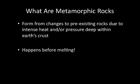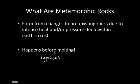So what are metamorphic rocks and what makes them different? Metamorphic rocks form from changes to pre-existing rocks due to intense heat and/or pressure, and this always happens deep within the Earth's crust. An important note is that this happens before melting, because if the rock melts, that molten rock turns into an igneous rock after it cools and crystallizes. So this must happen before it melts — otherwise it's going to be an igneous rock.